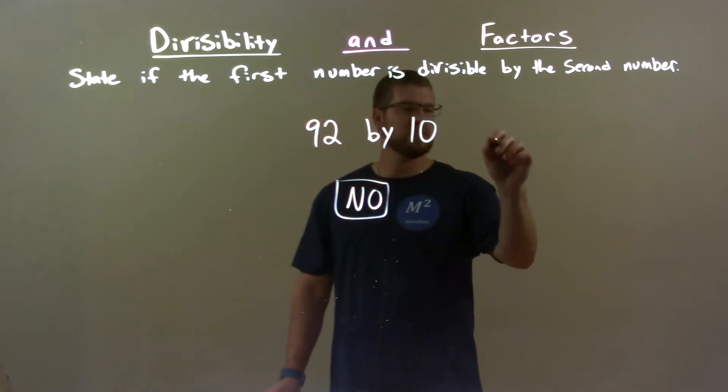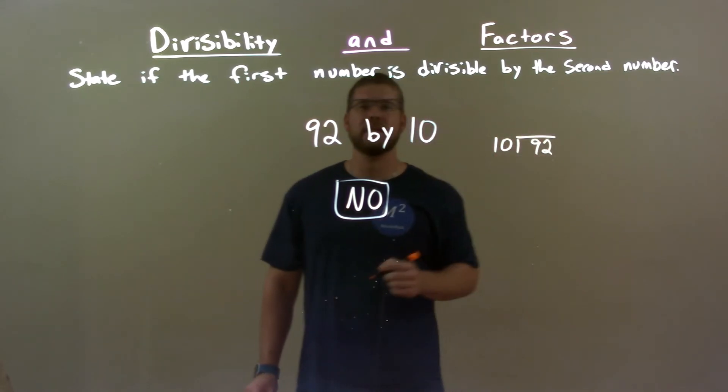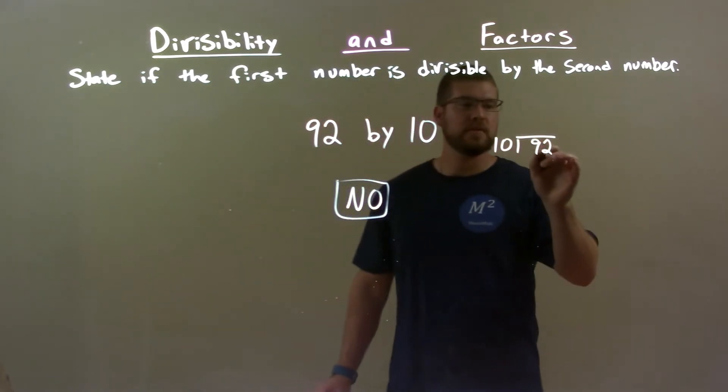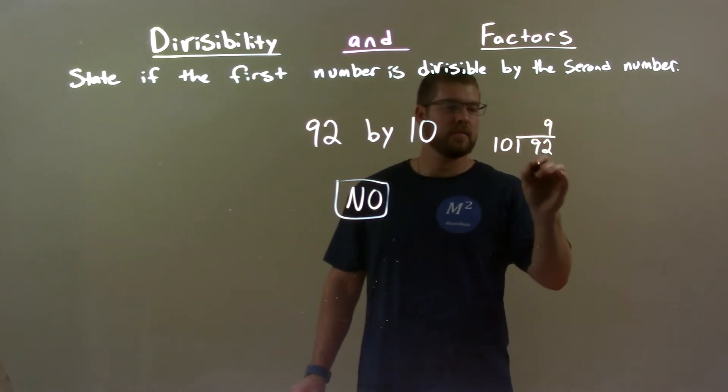If we did a long division, we can double check that. 10 into 92. Well, 10 goes into 90 nine times, we're close, but we're left with a remainder of 2.